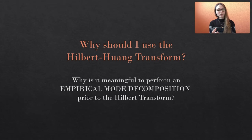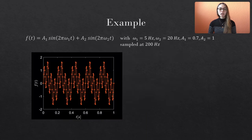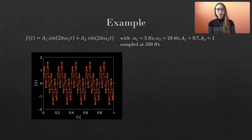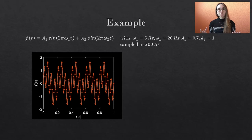If you're wondering what an empirical mode decomposition is, check out my video about this decomposition method. Otherwise, let's take some exemplary data to visualize the advantage of this approach. Our data is a combination of two sine waves, one with 5 Hz and one with 20 Hz. The amplitude of the low frequency sine is 0.7 and the higher frequency wave is scaled by 1. The data is sampled at 200 Hz — you can see the continuous as well as the discrete data points in the figure. The time span measures 5 seconds in total.